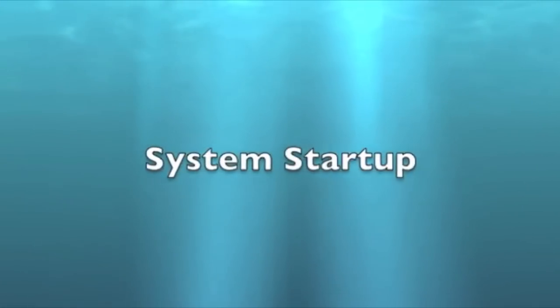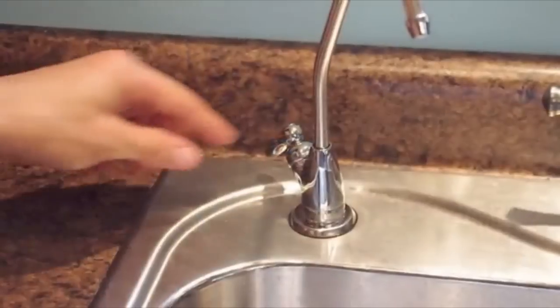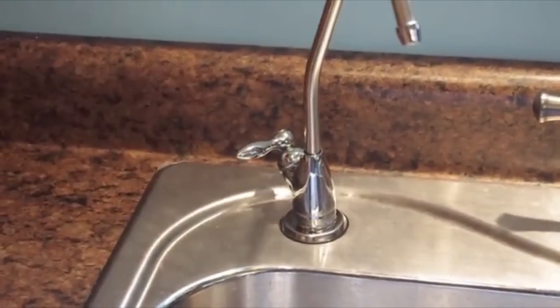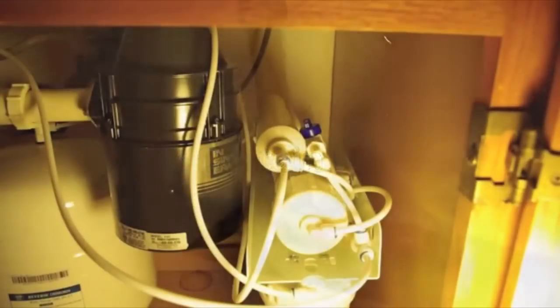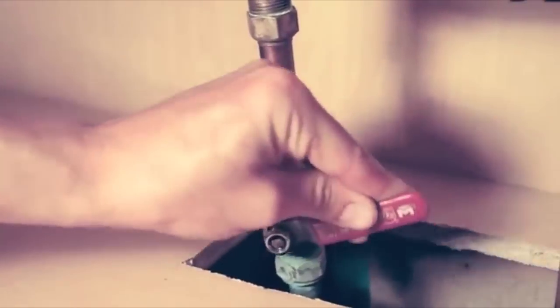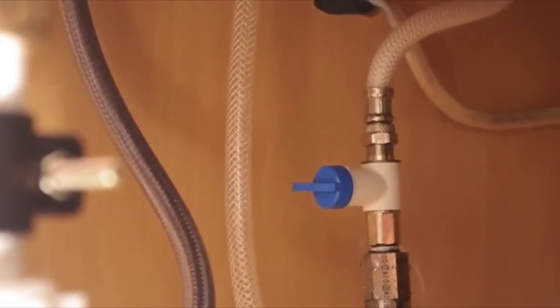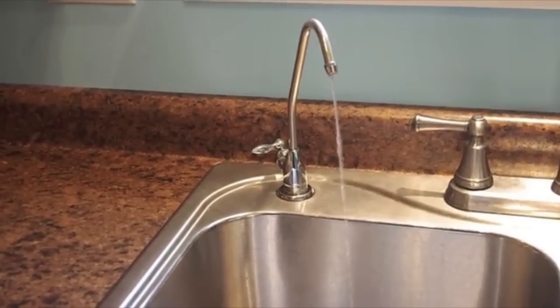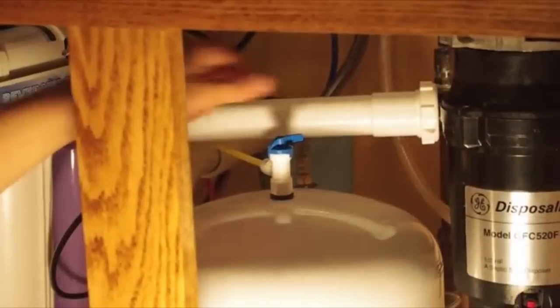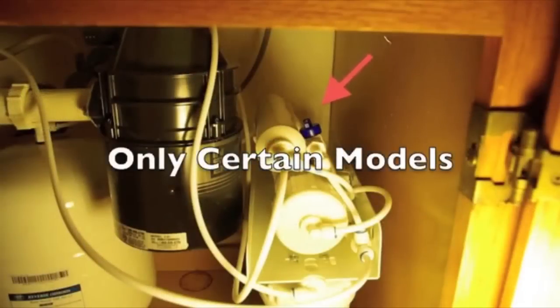System startup. Turn off the tank valve so the handle is perpendicular to the hose. Turn on the reverse osmosis faucet. In systems with manual flush valves, open the flush valve. Turn on the cold water supply. Turn on the reverse osmosis supply valve and check the system for leaks. After five minutes, water should start to dribble from the faucet. Turn off the manual flush valve if installed.